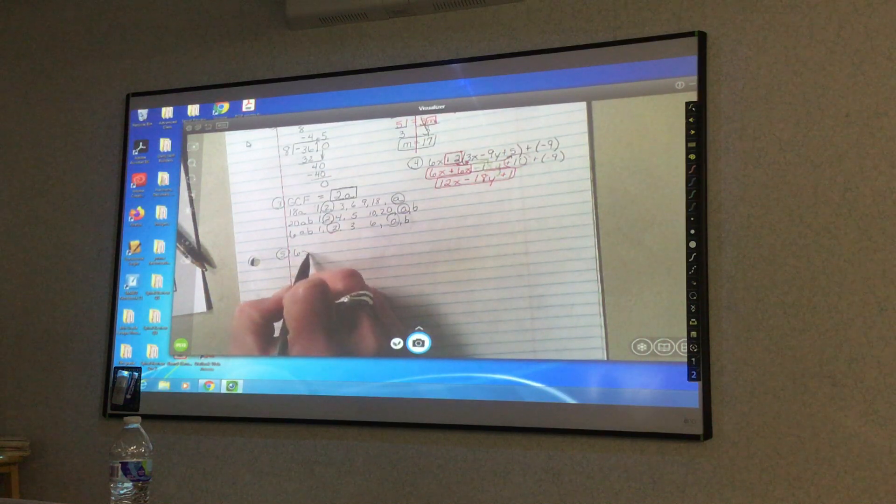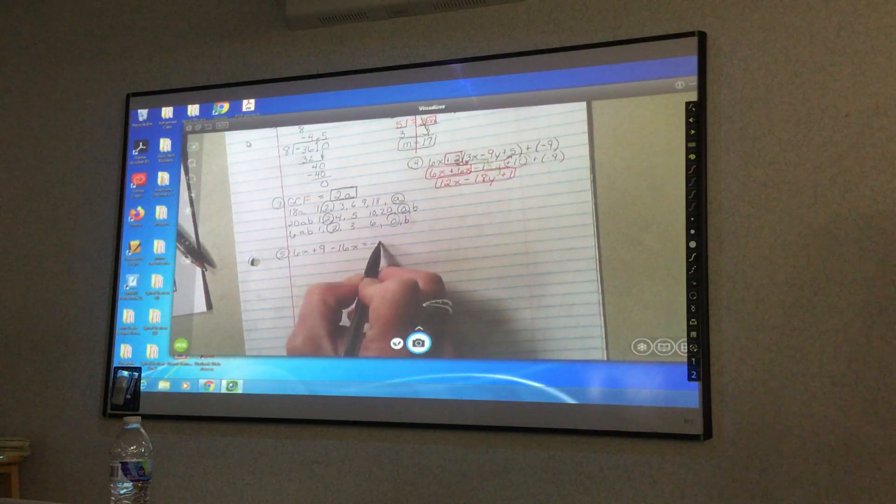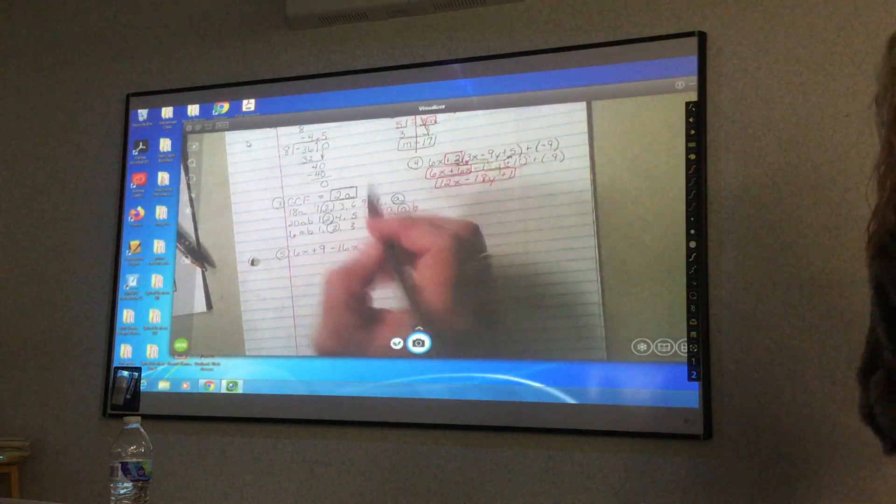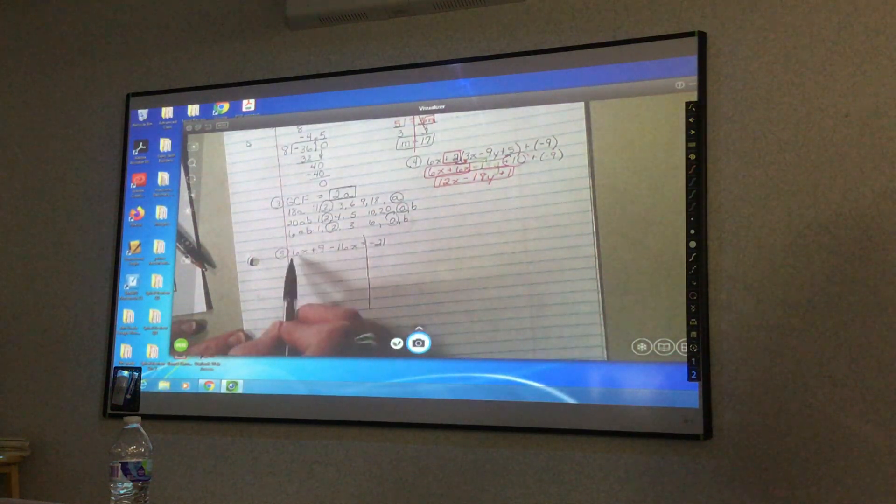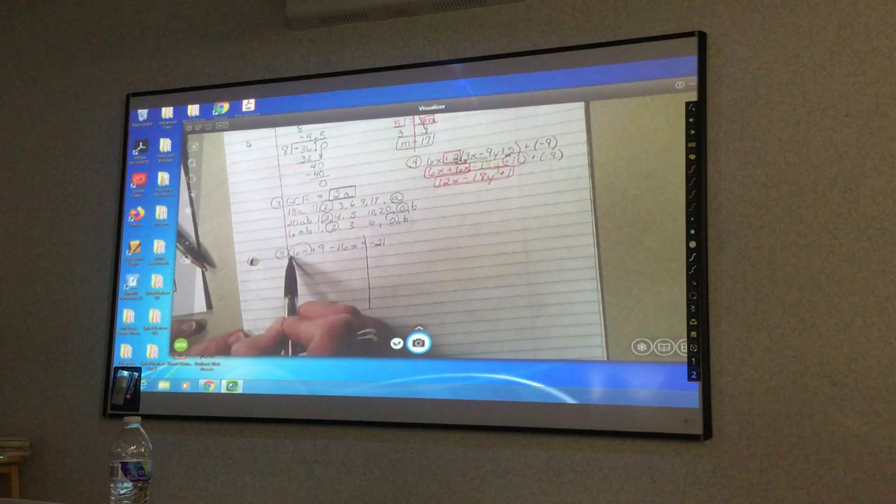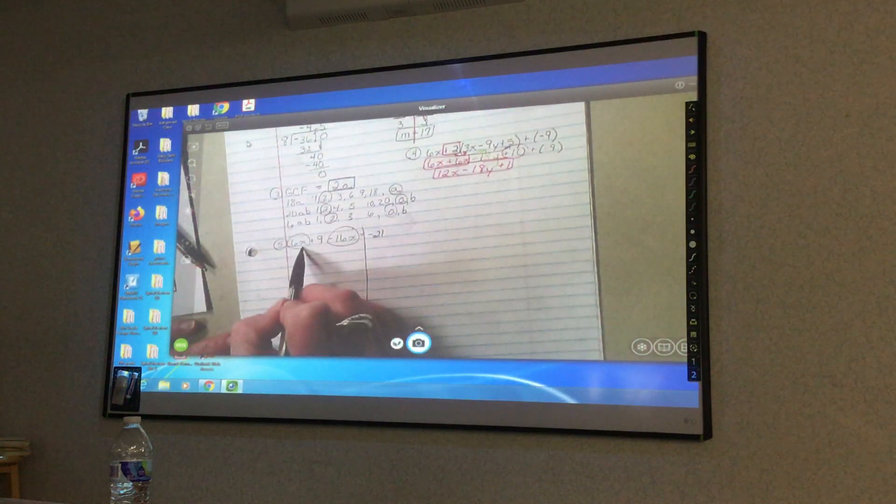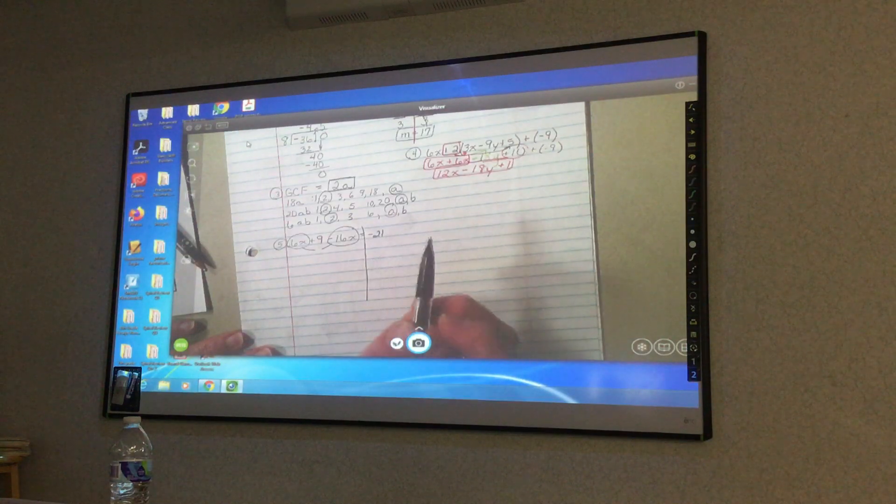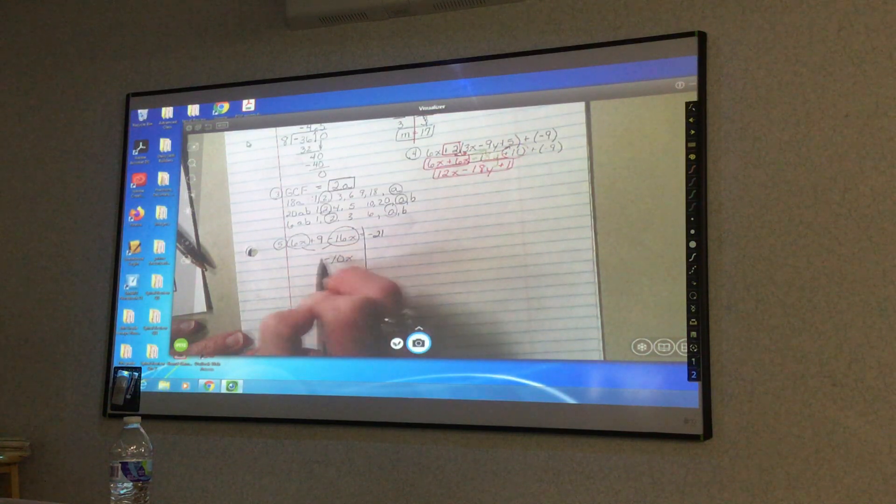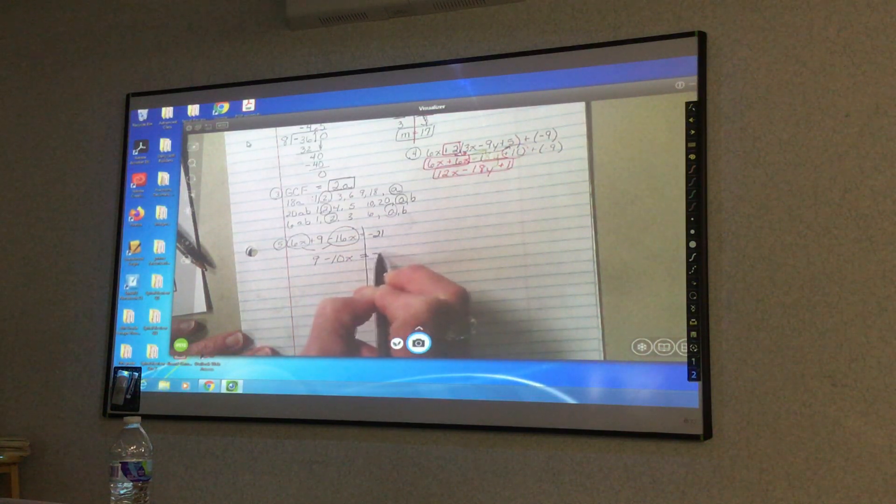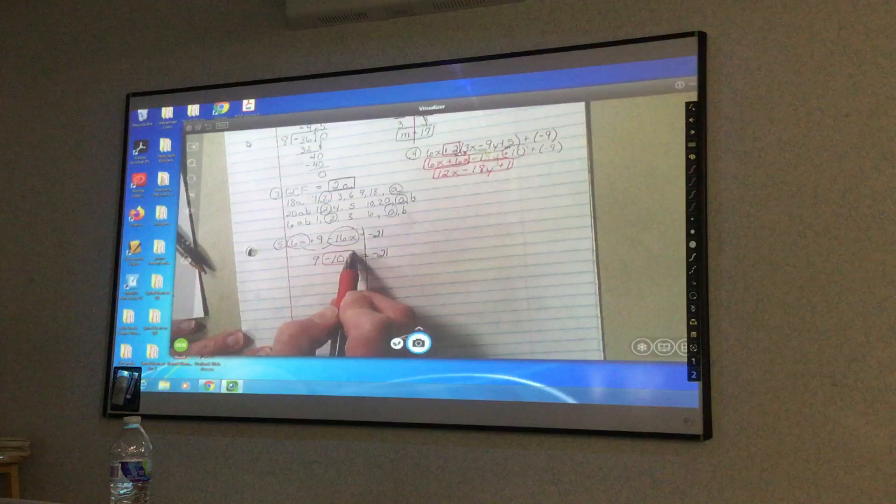Number 5. 6x plus 9 minus 16x equals negative 21. Draw your line. Now I have positive 6x and negative 16x. I want to combine those first together. So if one's positive, one's negative, I subtract. So it's 16 minus 6. Negative 10x. It would be negative 10x. And bring down the 9. And bring out everything else I haven't used. Then I box up my negative 10x.